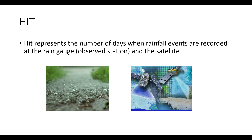You can do hit analysis for various rainfall ranges: 0 to 10mm can be termed as light rainfall, 10 to 50 can be termed as medium rainfall, and greater than 50 can be termed as very high rainfall. You can categorize into these categories and then also determine what is hit, miss, false alarm, and correct negative.